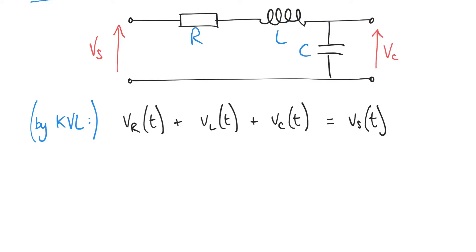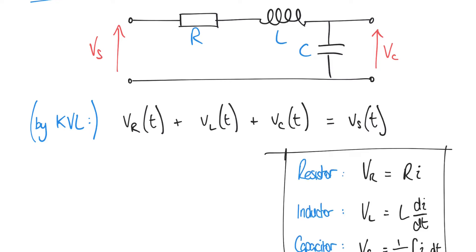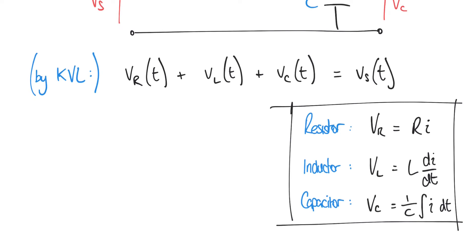As was the case in our previous video when we looked at first order systems, likewise in this example we want to see one side of the equation entirely in terms of the input VS(t), and we also want to see the other side of the equation entirely in terms of the output, so in terms of VC(t). To do this we're going to make some substitutions, revisiting the describing equations for each component. For a resistor, VR equals R times I. For the inductor, VL equals L times dI/dt, and for a capacitor, VC equals 1/C multiplied by the integral of current I with respect to time.